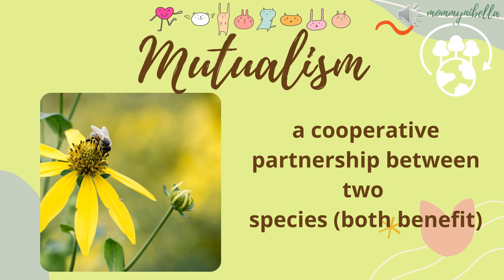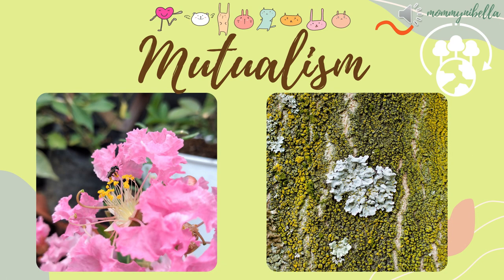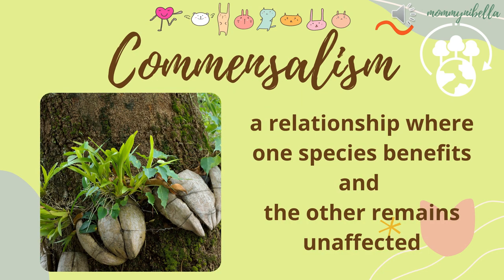These two are examples of mutualism: the first one is called pollination, and the second one is the fungi and protists example — lichen. Commensalism is a relationship where one species benefits and the other remains unaffected.